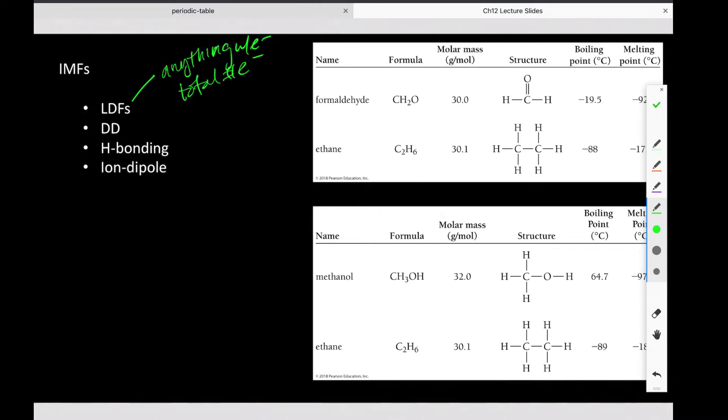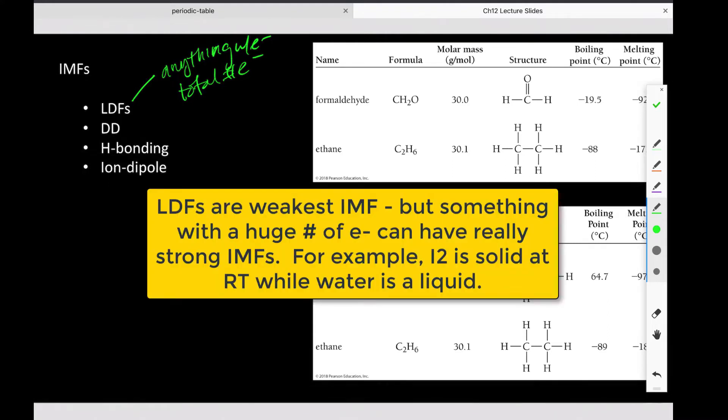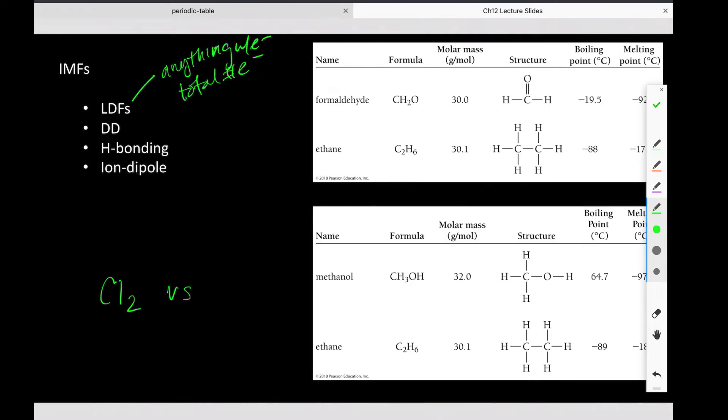And if they are unevenly distributed at one instant, then for that instant, that atom or molecule is polar, which then it can induce that same polarity in its neighbor, which can then induce it in its neighbor, and we get this network of instantaneous induced dipoles. And that's what an LDF is. So if we're going to rate the LDF of one thing relative to another thing, it's simply based on the total number of electrons.